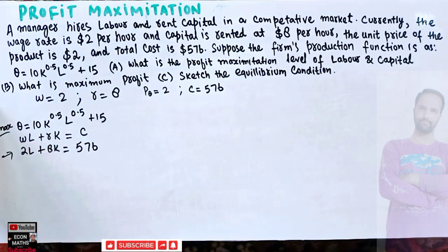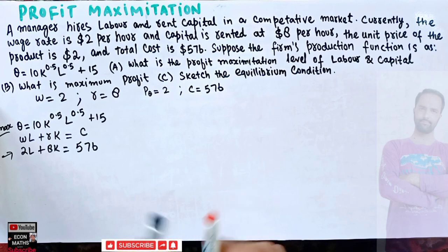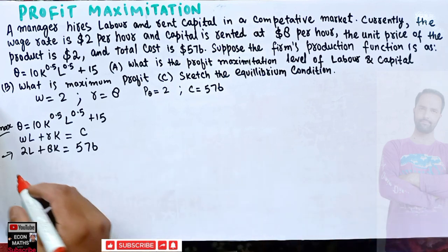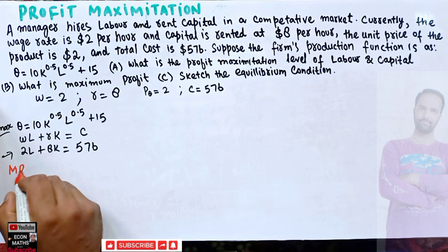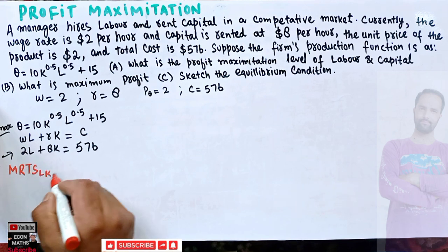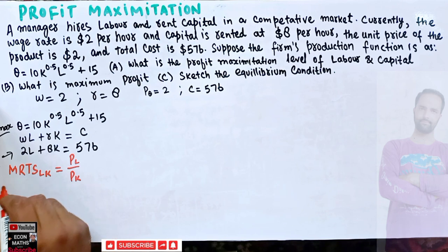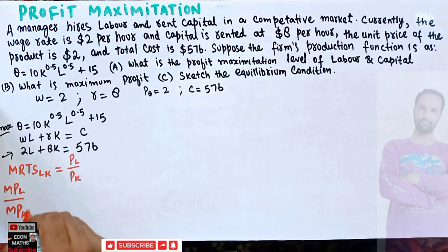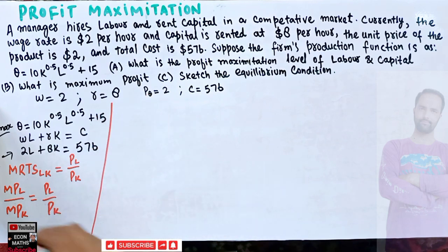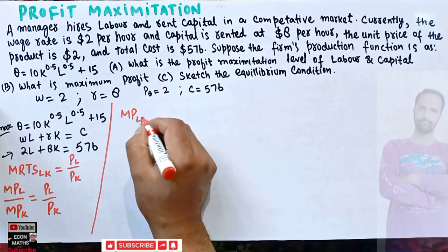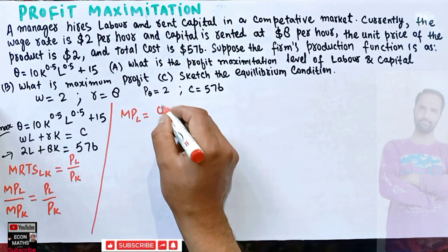To solve this, we can use either the Lagrangian method or the tangency condition. Let's apply the tangency condition. The tangency condition states that the marginal rate of technical substitution between labor and capital should equal the ratio of their prices — that is, MPL / MPK = price of labor / price of capital.